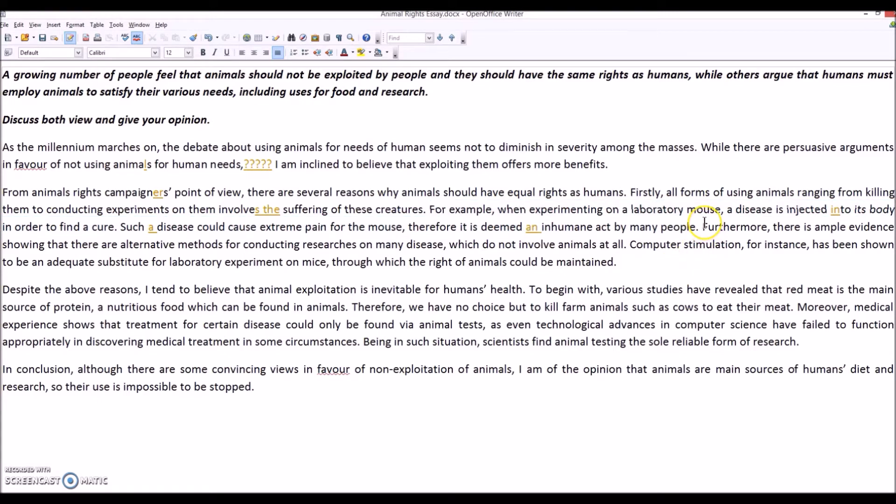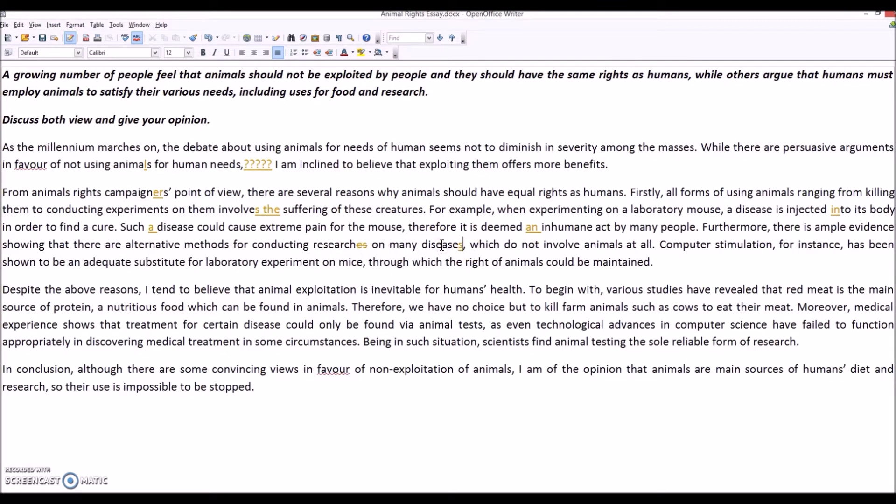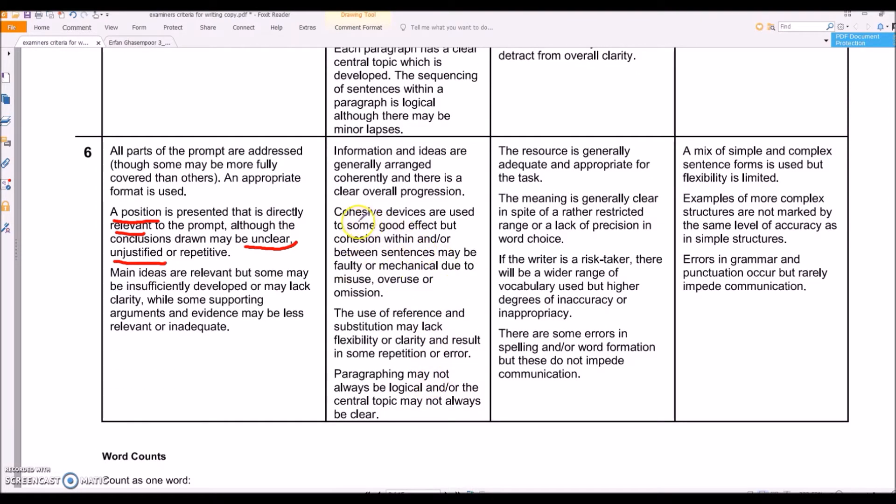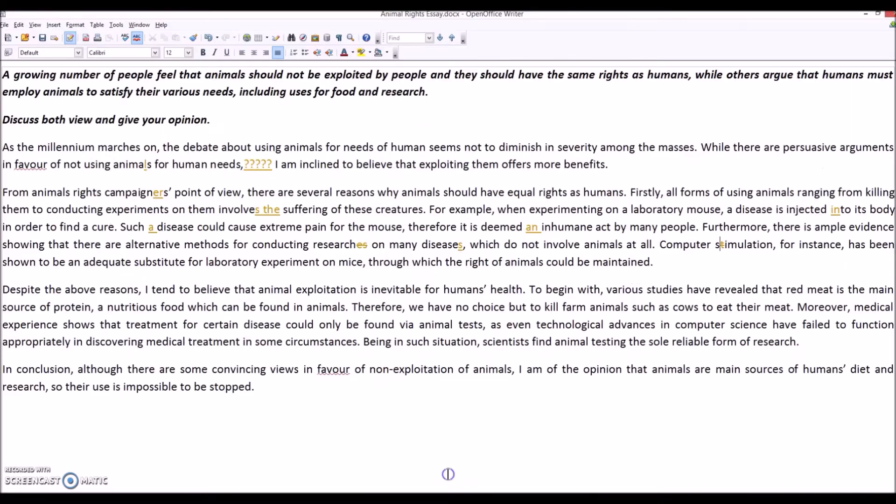You've got to watch your grammar here. There's a few mistakes that would pull your band score down. Therefore it is deemed an inhuman act by many people. So first you're talking about several reasons why they should have rights, and then you say that all forms of using animals involves some kind of suffering. Then we've got a very kind of general example. Furthermore, there is ample evidence showing that there are alternative methods conducting research on many diseases which are not involved in animals at all. Computer simulation has been shown to be an adequate substitute. That isn't too bad. That isn't bad. Now one thing though, you've got to watch your cohesive markers.